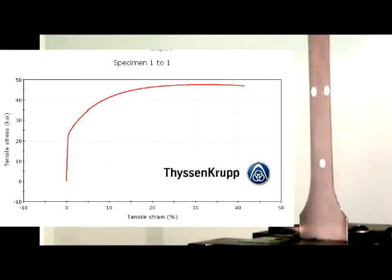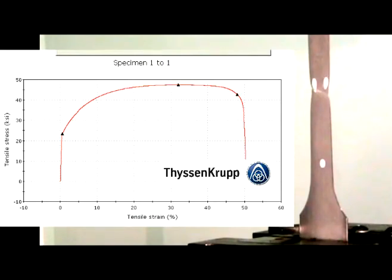Typical summary values determined are yield strength, ultimate tensile strength, and percent elongation. Other data, such as N and R values, can also be determined.